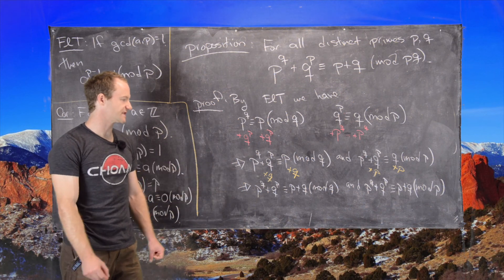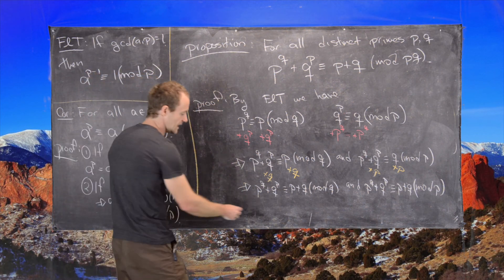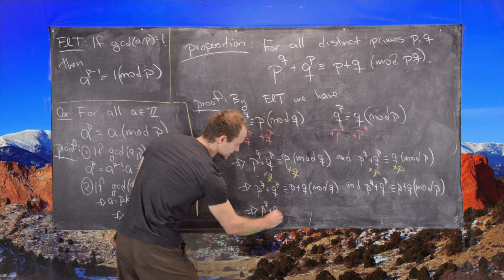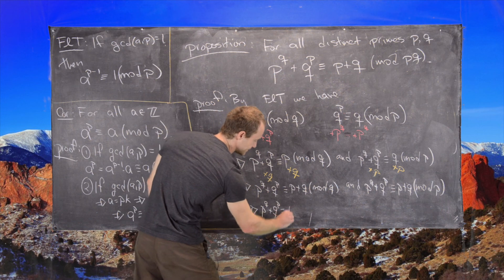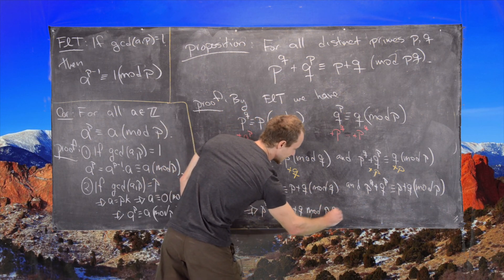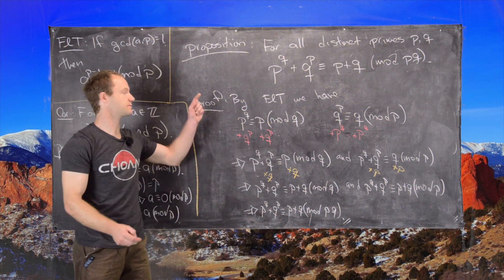And now we're essentially done. Now we can apply the lemma that we had on the previous board. And that tells us that P to the Q plus Q to the P is congruent to P plus Q mod P times Q. And that's the end of this proposition.